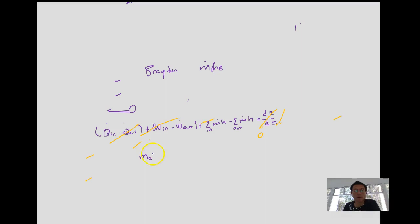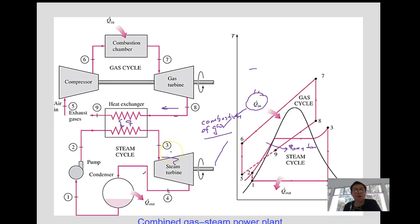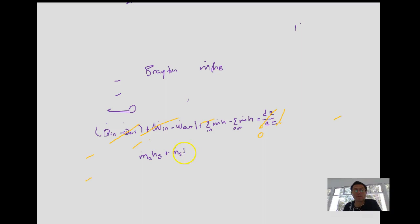All the estimations, so it's mass flow rate of air h_8 plus mass flow rate of steam h_2 minus mass flow rate of air h_9 minus...